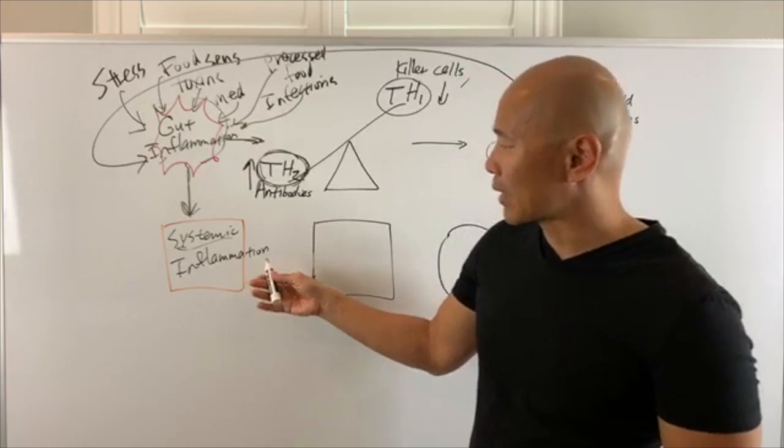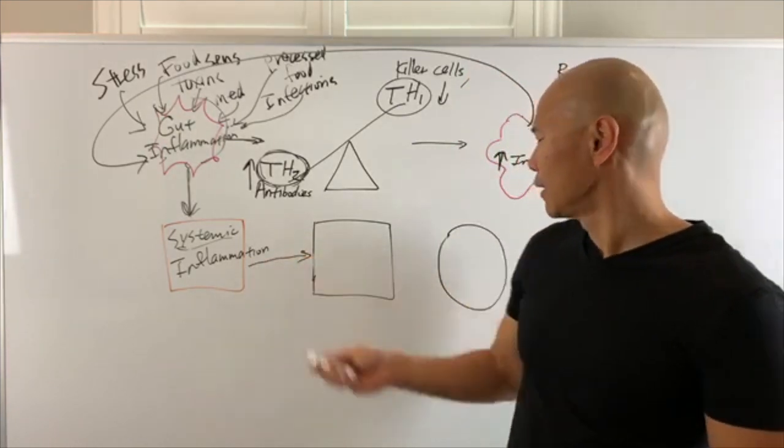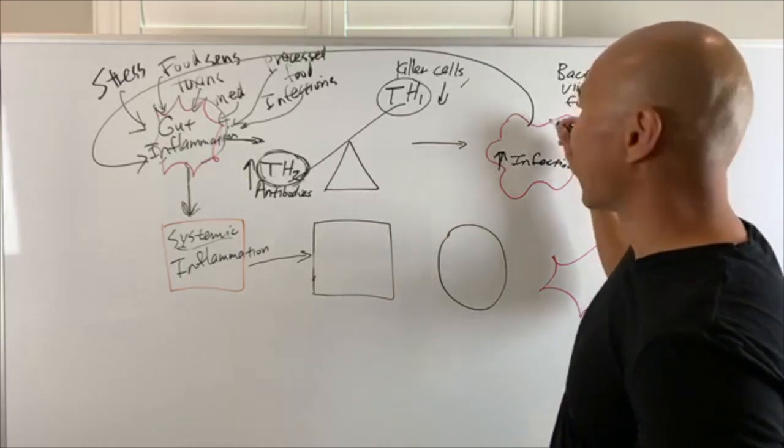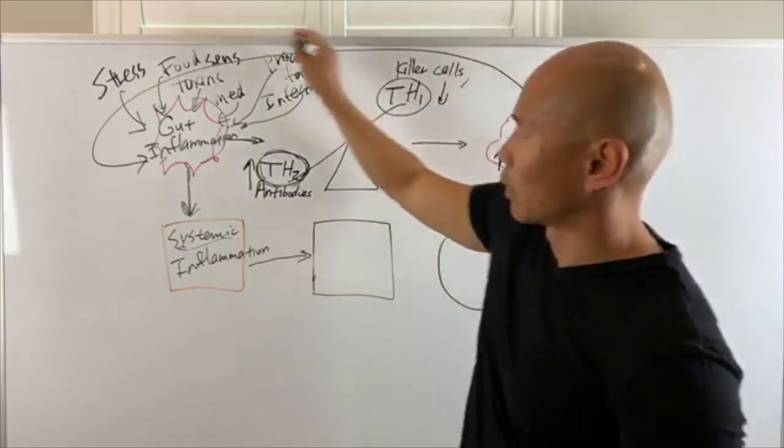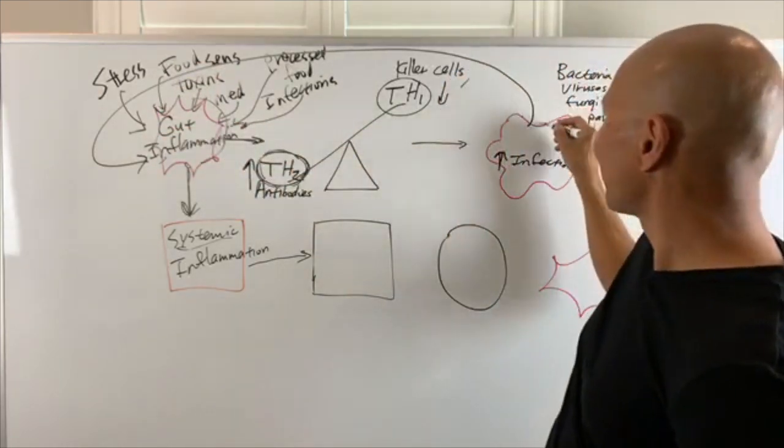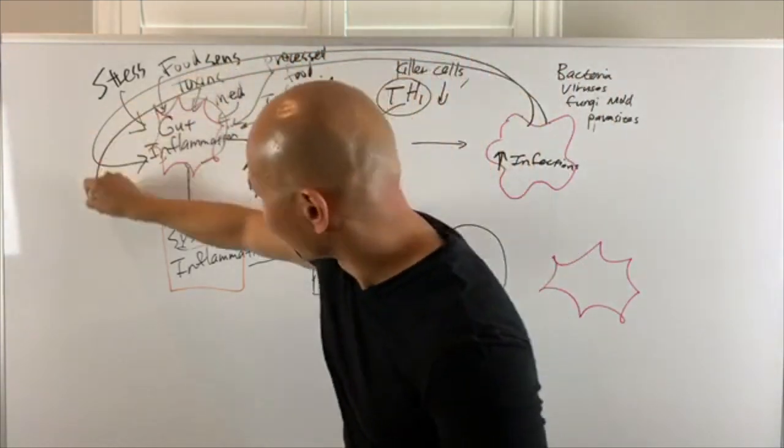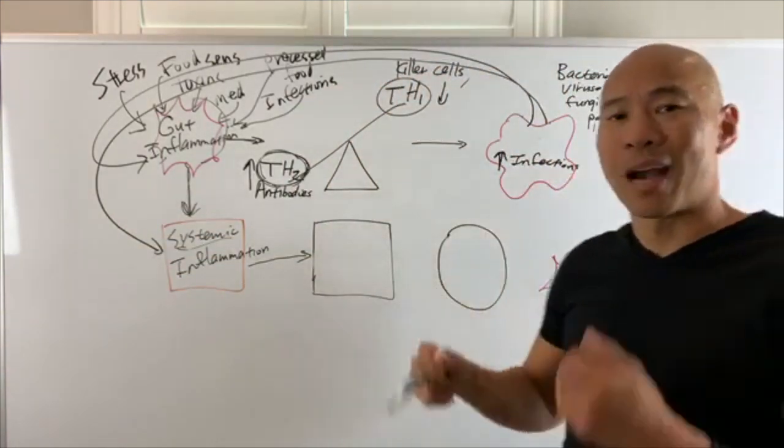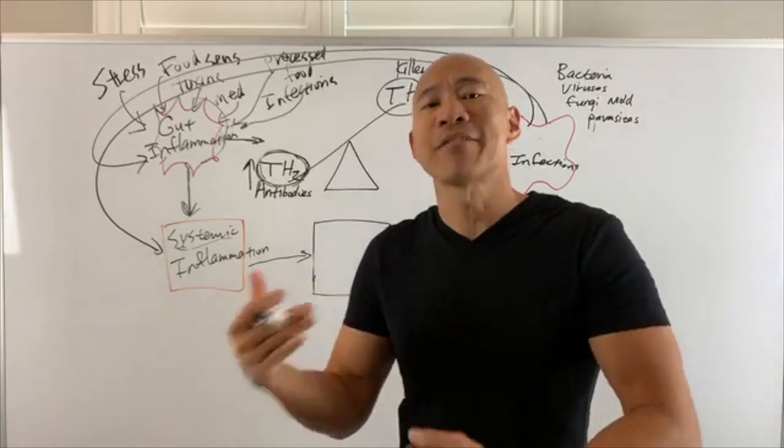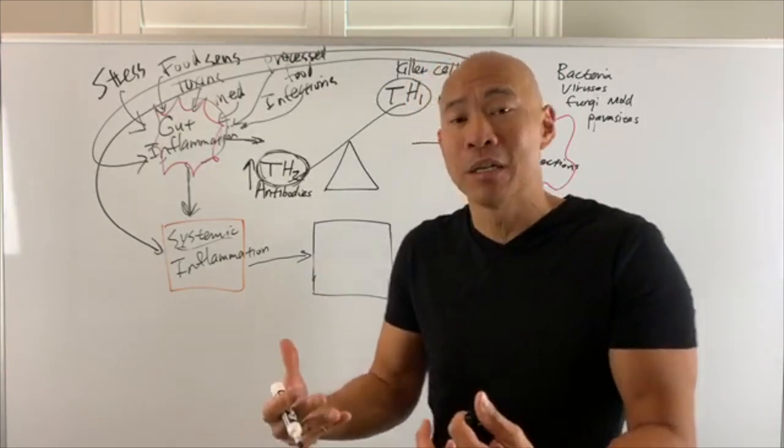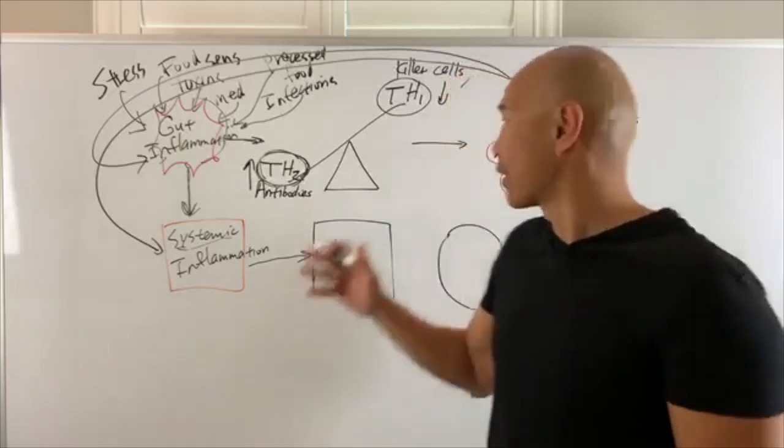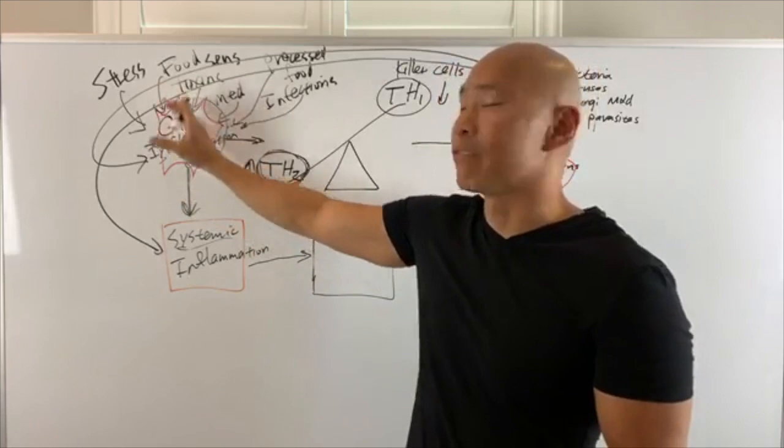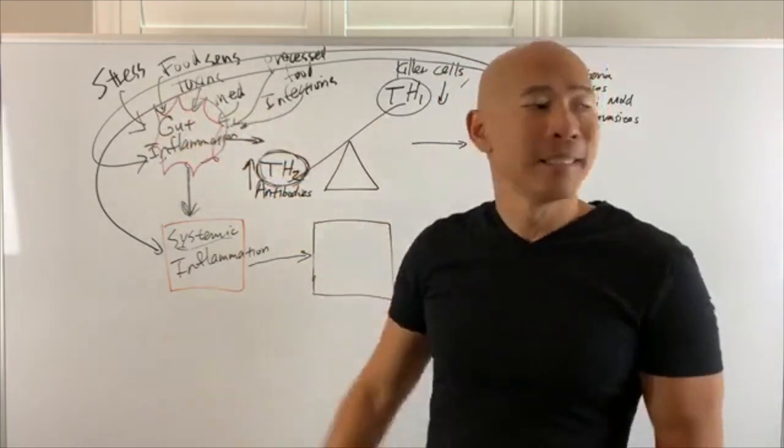Now the problem with that systemic inflammation is going to trigger other things. Now before I get into that, you have this infection here, remember, can trigger more gut inflammation. Remember, if you have an infection, this infection can also trigger more systemic inflammation. Because anytime you have an infection, you're activating your immune system. You're activating that part of your immune system. That are the soldiers, the cops, who are there to protect you and get rid of the bad guys.